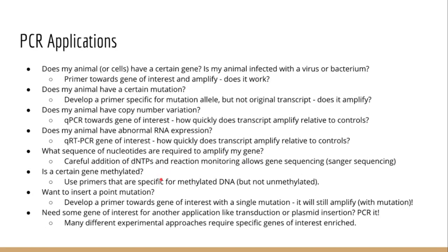Is a certain gene methylated? This can be answered by using a special primer that is specific for methylated DNA. Point mutations can also be inserted with PCR in a process called site-directed mutagenesis, which involves using a primer that contains a mutation but still retains the ability to bind and prime DNA synthesis. Following amplification, the DNA will contain that original mutation purposefully designed into the primers. Generally, PCR is also used simply to amplify DNA or RNA, which has endless possibilities and is a very common precursor technique to more advanced methods.